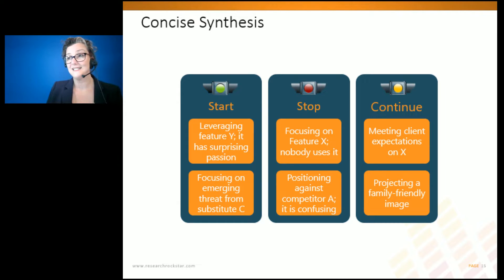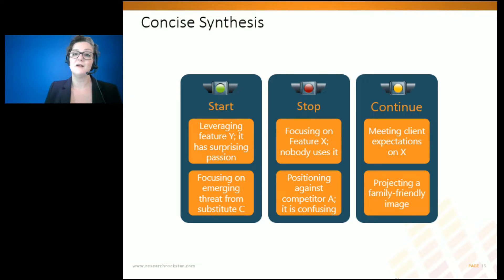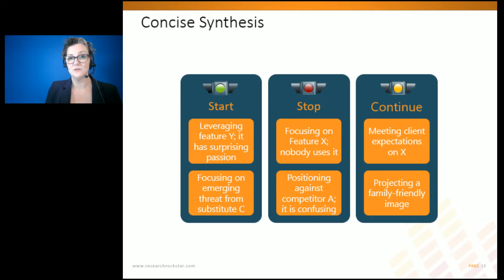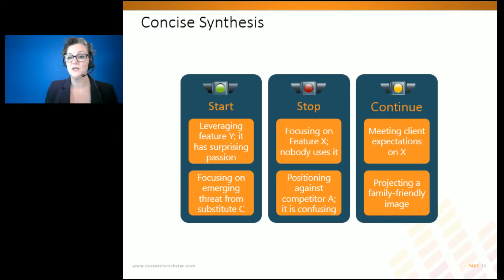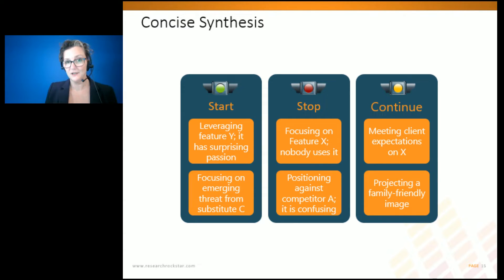If you are delivering your research results to a business executive — a chief marketing officer, the CEO, other top executives — they'll have been familiar with this framework. What we're doing is taking the key results from the research, the things most tightly aligned with our stated project objectives, and putting them into buckets based on their implications: things the company should start doing, stop doing, and continue doing.